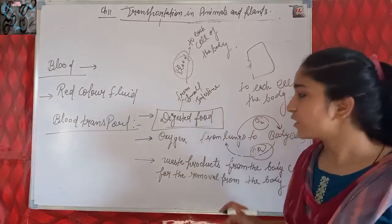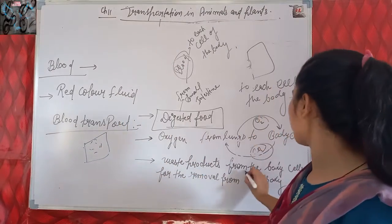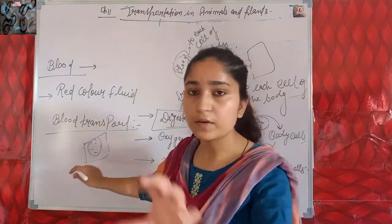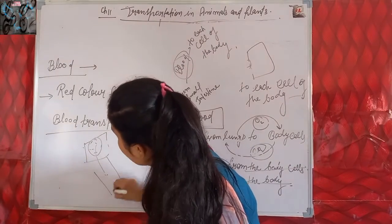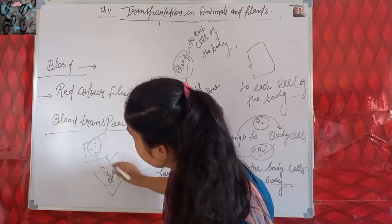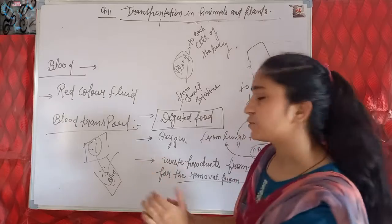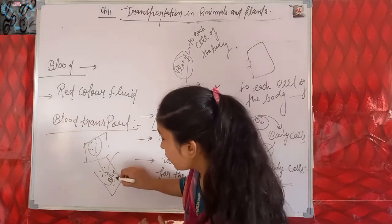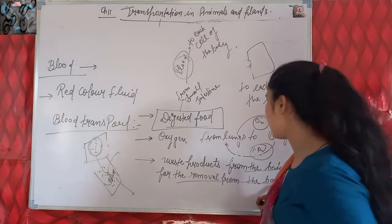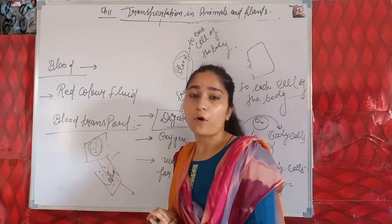Next is waste products. Waste products that are formed in our body cells, for the removal from the body, get mixed into blood and are transported in the blood. So waste products flow in the blood for the removal from the body.